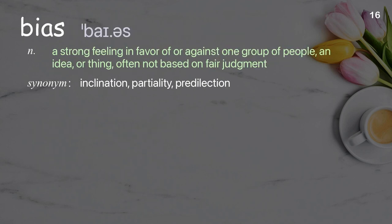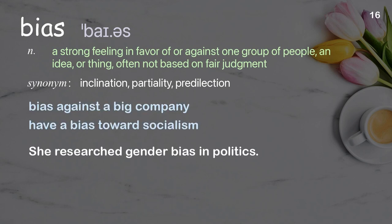Bias. A strong feeling in favor of or against one group of people, an idea, or thing, often not based on fair judgment. Examples: bias against a big company, have a bias towards socialism. She researched gender bias in politics.